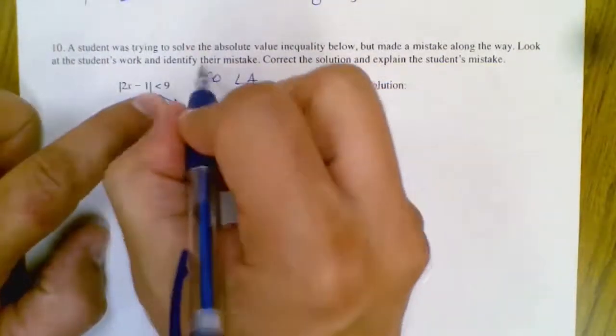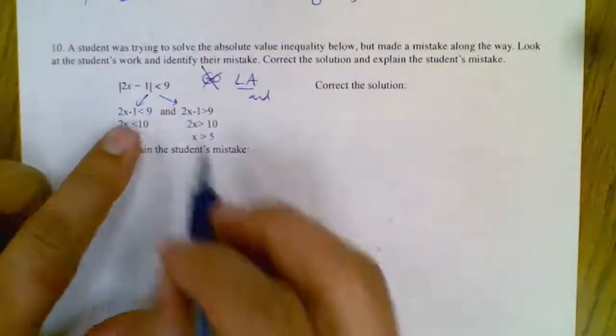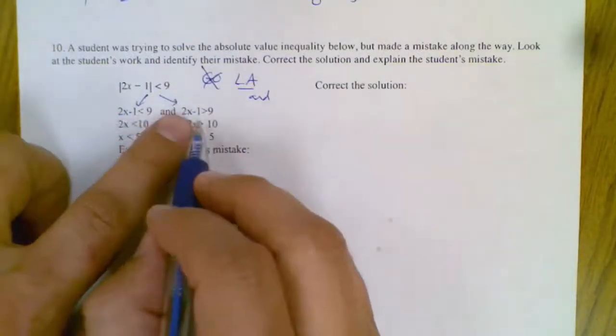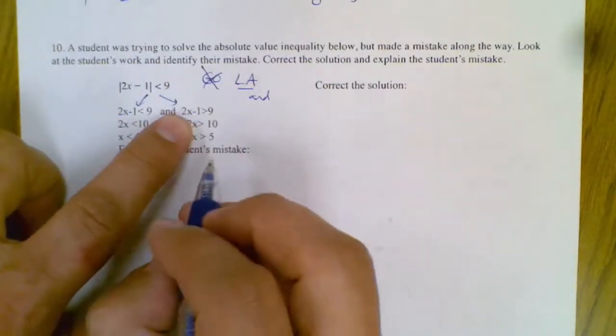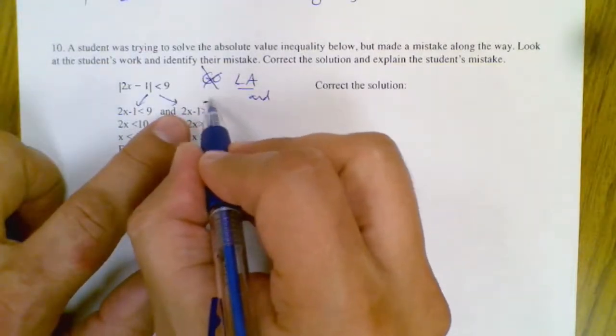since it's a less than, it's an and. So I like that they wrote and. So far the student's looking pretty good. You copy it down here. Oh, I see the mistake. See how they flipped the symbol but they didn't change that to a negative 9.